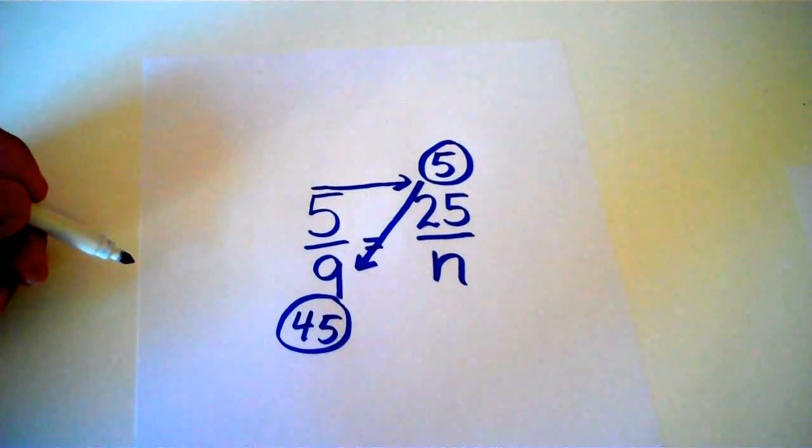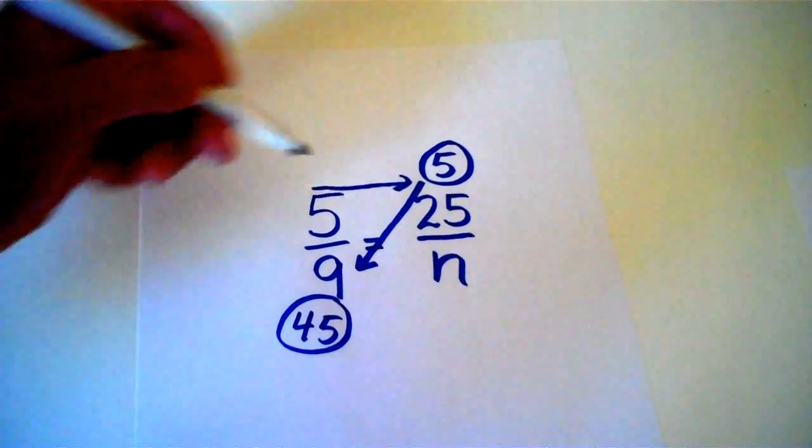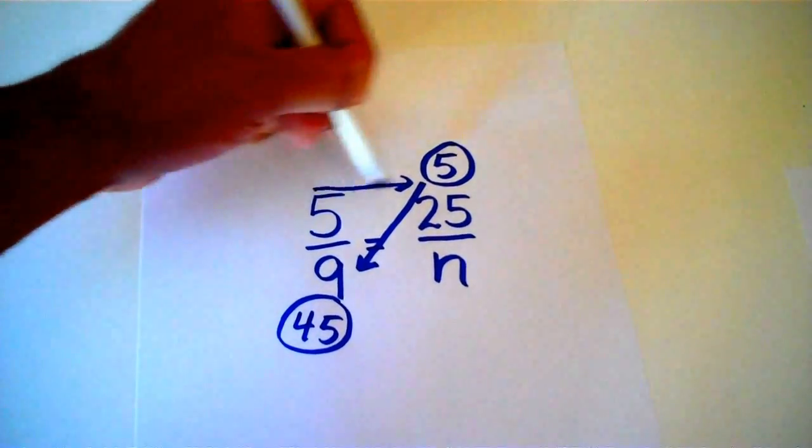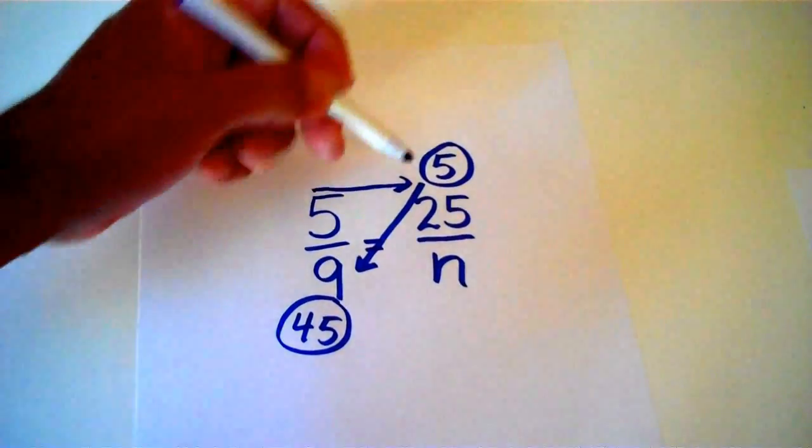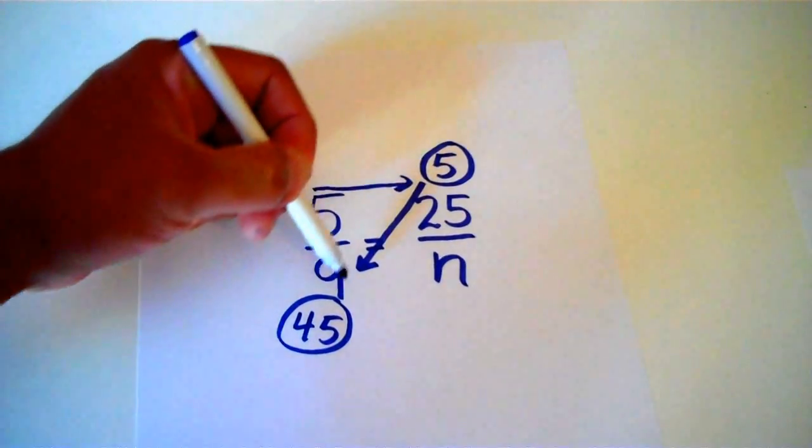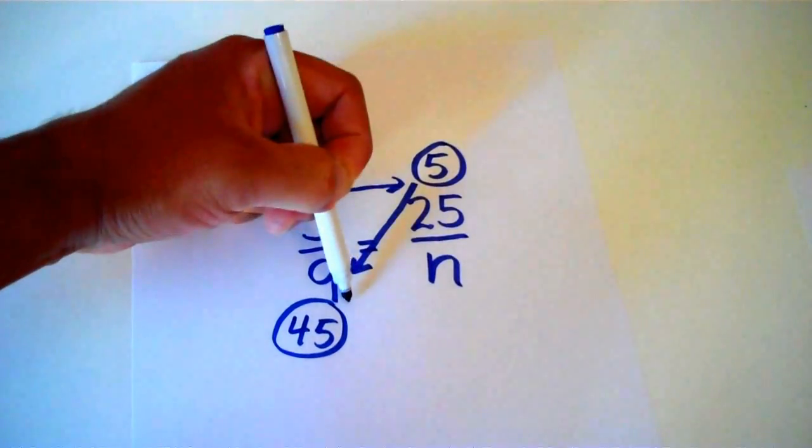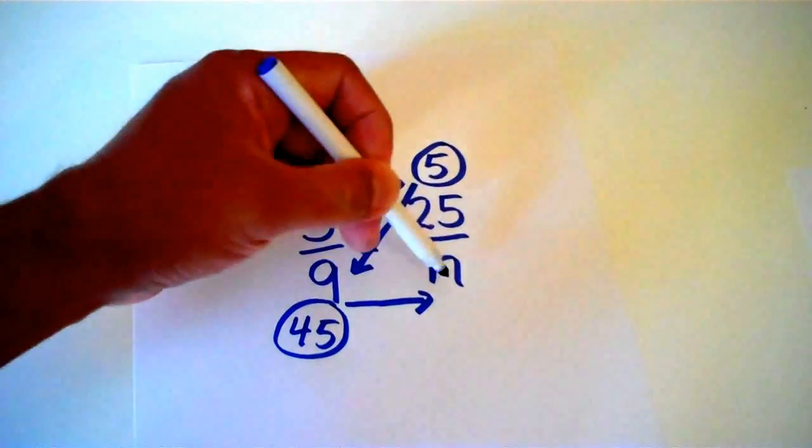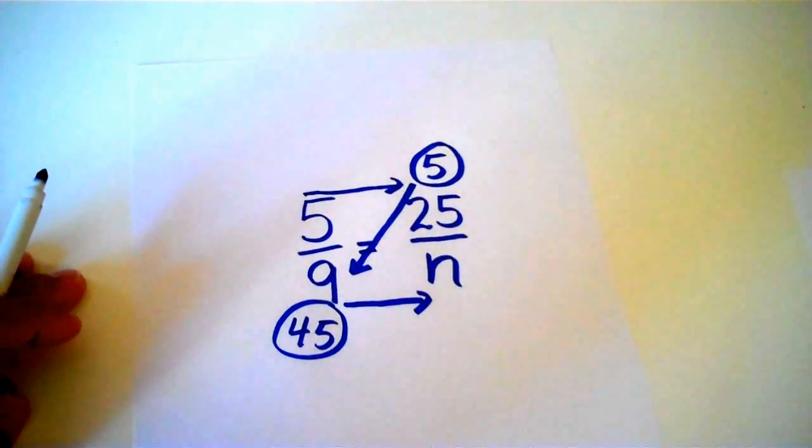So the reason why I call this the easy Z way is, if we follow the arrows, 5 divided into 25 was 5. We multiplied the 5 times 9 and got 45, and that would equal what our variable is, which was 45.